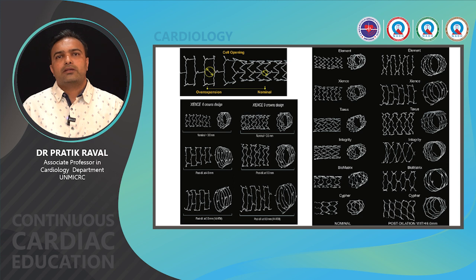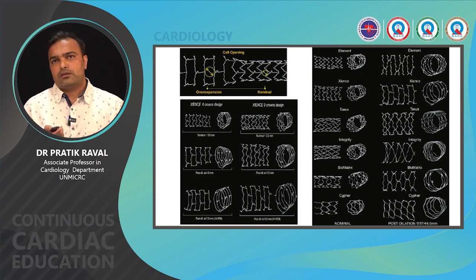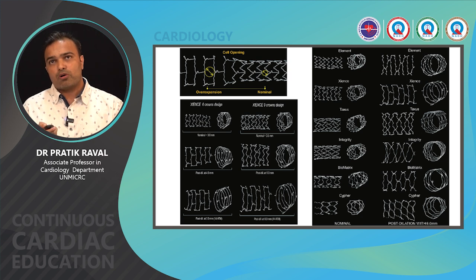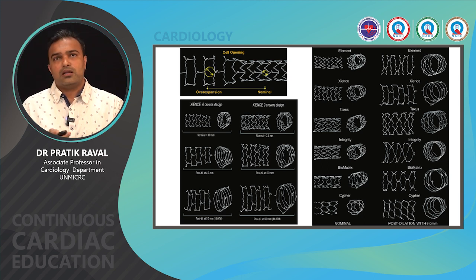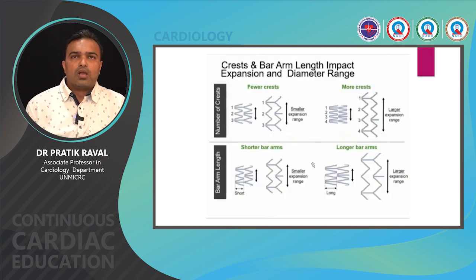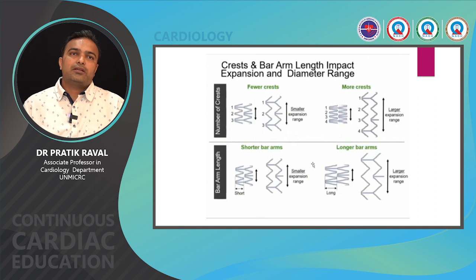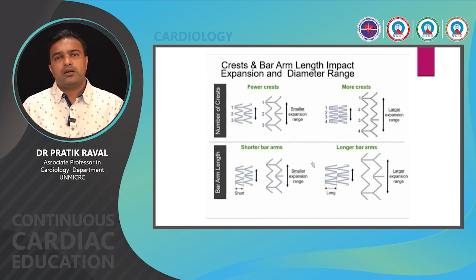This figure shows the cell architecture of some commonly used stents — how the stent architecture looks on balloon inflation, and how cells open up and change orientation when inflated with an oversized balloon. Cells become more horizontal and cell opening increases with increasing balloon diameter, thereby improving side branch access. The expansion capacity of a stent is largely determined by the number of crests and the length of the baram — a higher number of crests and a longer baram both result in a larger expansion capacity.